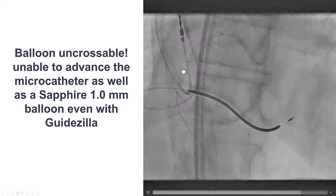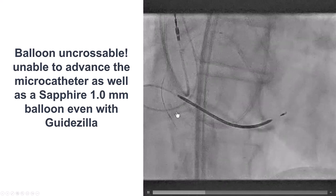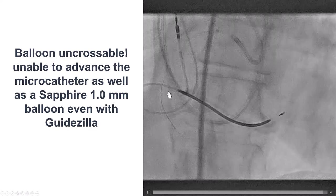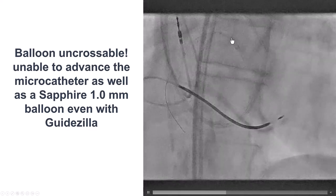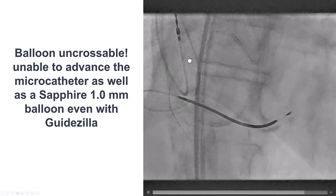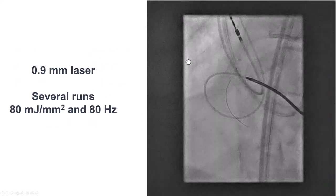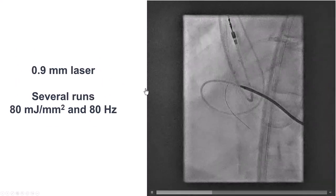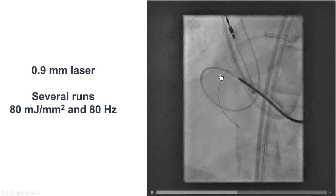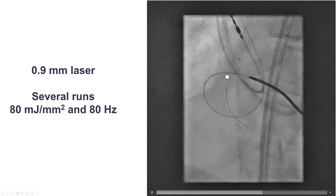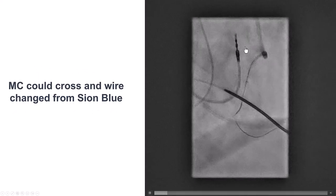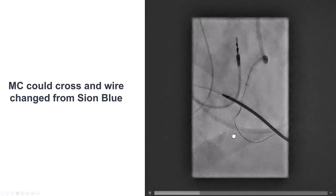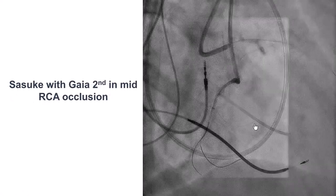That lesion ended up being balloon uncrossable. We couldn't get the microcatheter through, and we couldn't get a 1.0 mm Sapphire balloon, even when we used a guide extension for extra support. So what we did next was a few passes with a 0.9 mm laser. Although the laser did not actually pass through the mid-right coronary artery, we were then able to advance the microcatheter and changed to a workhorse guide wire into the acute marginal branch.